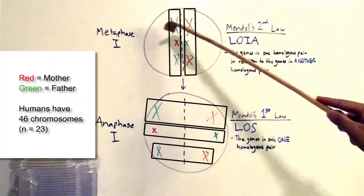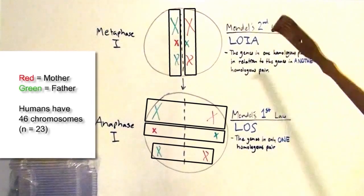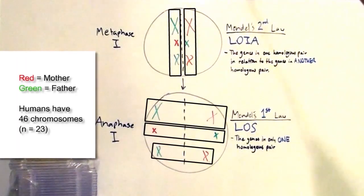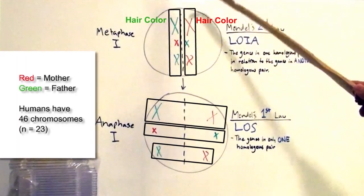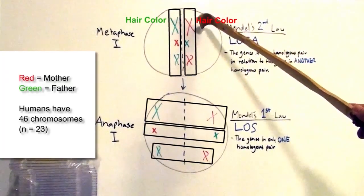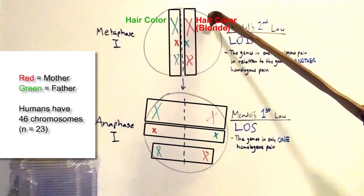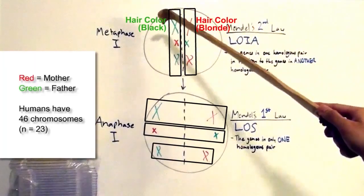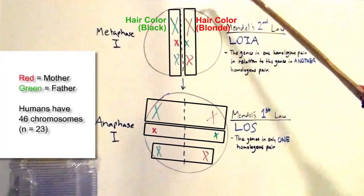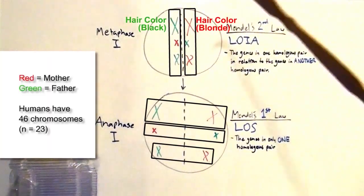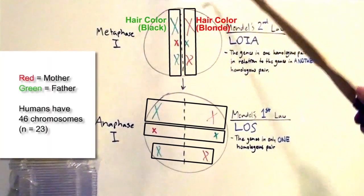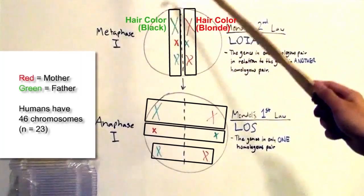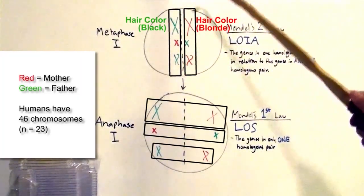Let's say that for human chromosome pair number one — and remember there are 23 pairs, I've just drawn three — on chromosome pair one, there is a gene for hair color. For that gene, mom provides an allele that codes for blonde hair and dad provides an allele that codes for black hair. That one gene for hair color is involved in just homologous pair one. We are talking about just one gene — the gene for hair color on homologous pair one — one allele from mom, one allele from dad.